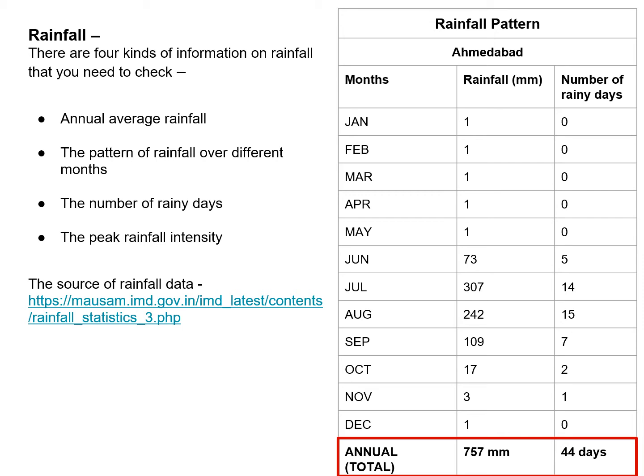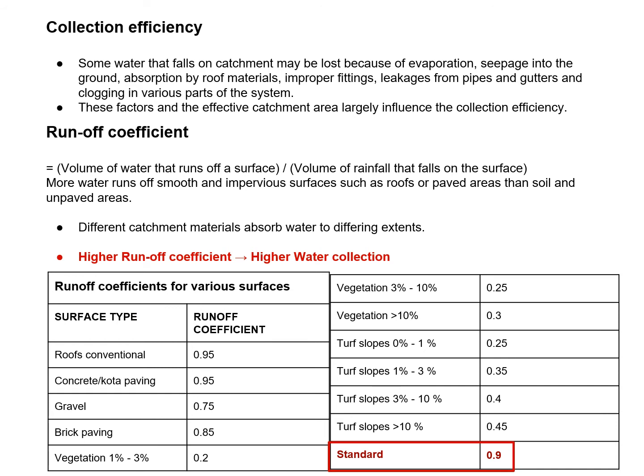The source of this rainfall data is from the site referenced here. There is one more important measure, which is collection efficiency — it tells us how much water we can collect from different surfaces. The higher the runoff coefficient, the higher the water collection efficiency. In this table, there are different surface types and their runoff coefficients. The standard coefficient we usually consider is 0.9.